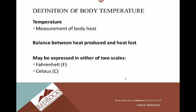Body temperature is really the balance between heat produced and heat lost, and it may be expressed in either of two scales. We're familiar with Fahrenheit, but Celsius is also used in a lot of institutions. There is no easy way to go between Fahrenheit and Celsius — there are calculations. Normal body temperature in Fahrenheit is about 98.6, with slight variation depending on where the temperature is taken. In Celsius, it's 37 degrees. It's important to know general normal ranges and to document whatever scale is used in your facility.